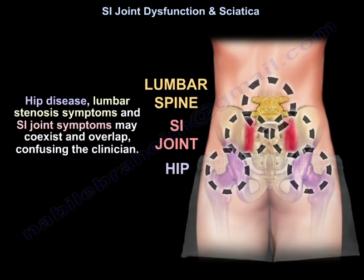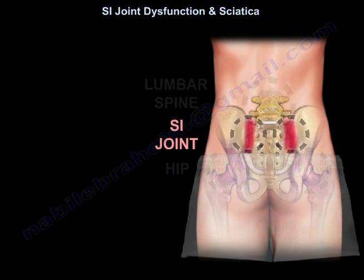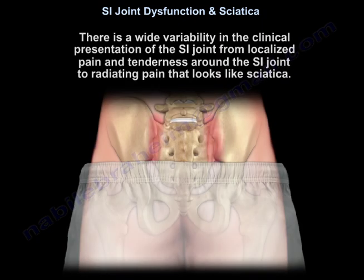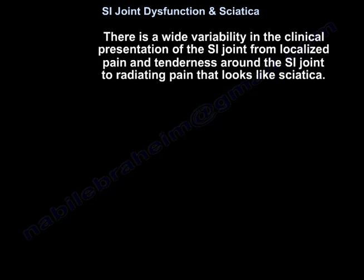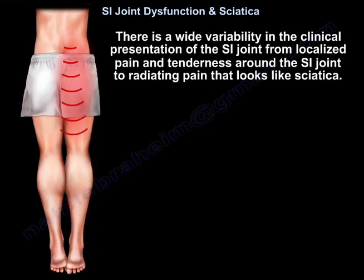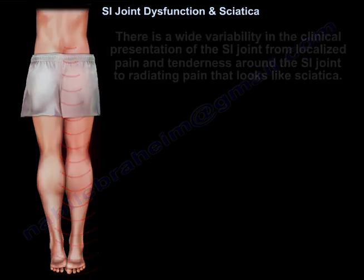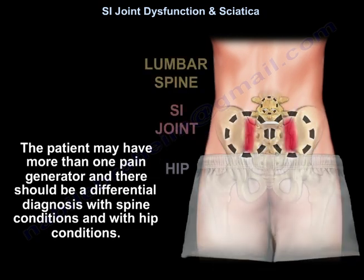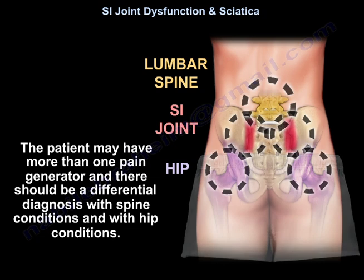Hip disease, lumbar stenosis symptoms, and SI joint symptoms may coexist and overlap, confusing the clinician. When you have an SI joint pain, you want to know if the SI joint is the predominant pain generator or not. There is wide variability in the clinical presentation of the sacroiliac joint, from localized pain and tenderness around the joint to radiating pain that looks like sciatica. The patient may have more than one pain generator, and there should be differential diagnosis with spine and hip conditions.